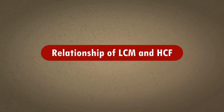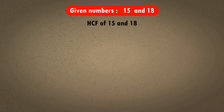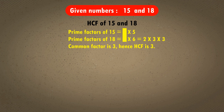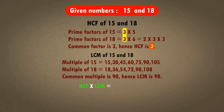Relationship of LCM and HCF. We will learn the relationship between HCF and LCM of two numbers. Let us consider the two given numbers 15 and 18. The prime factors of 15 are 3 × 5. The prime factors of 18 are 2 × 3 × 3. The common factor is 3, so HCF is 3. HCF × LCM = 3 × 90 = 270. Also, 15 × 18 = 270.